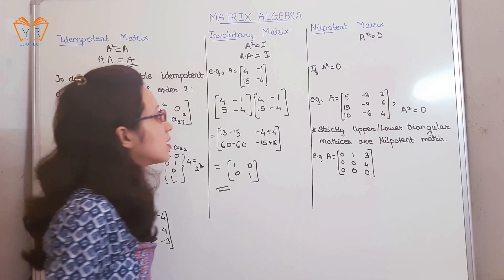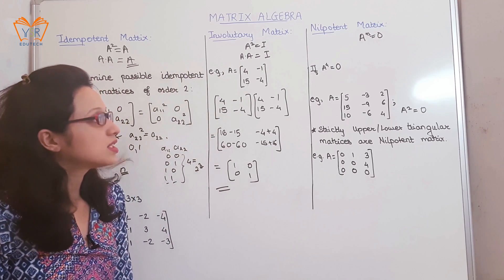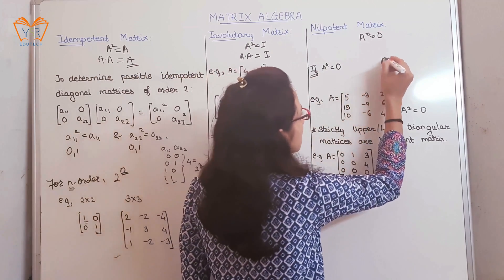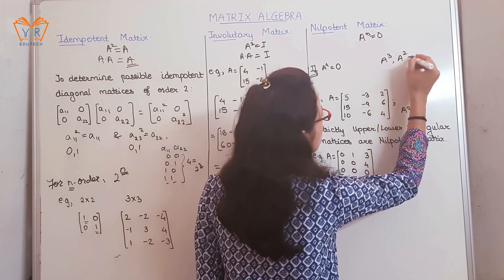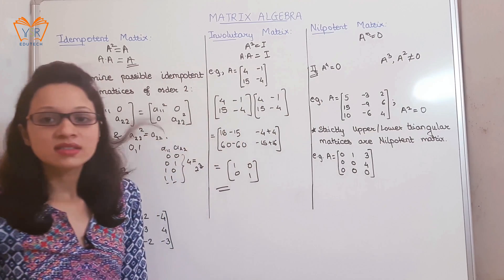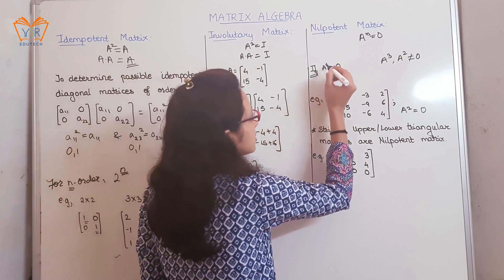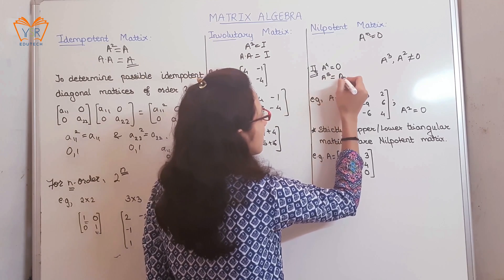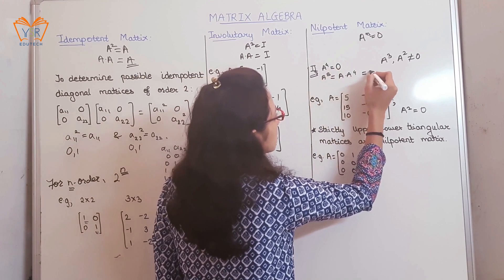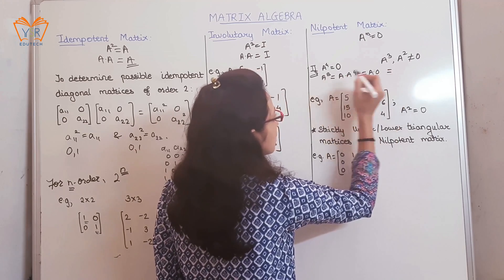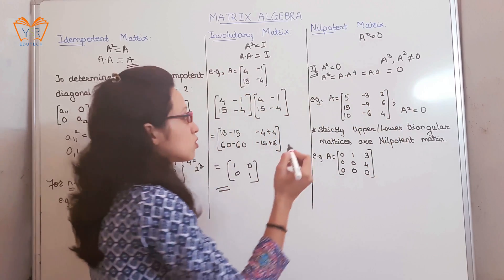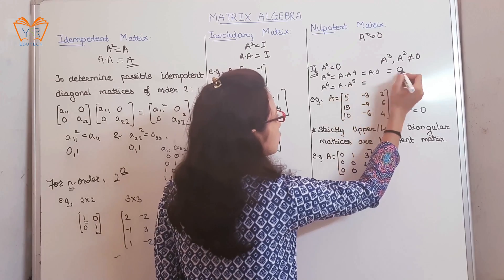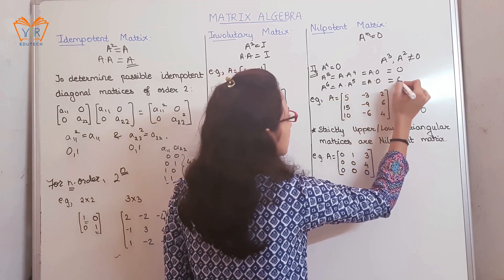Now, if A raised to 4 equals 0, we can conclude that A cubed and A squared are not null matrices — their values are non-zero. For index values greater than 4: A raised to 5 equals A times A⁴, and since A⁴ is 0, A⁵ is also 0. Similarly, A raised to 6 equals A times A⁵, and since A⁵ is 0, A⁶ is also 0 — that is, a null matrix.